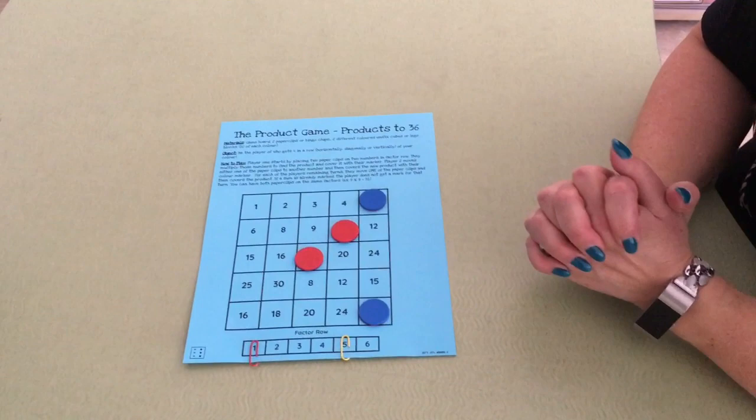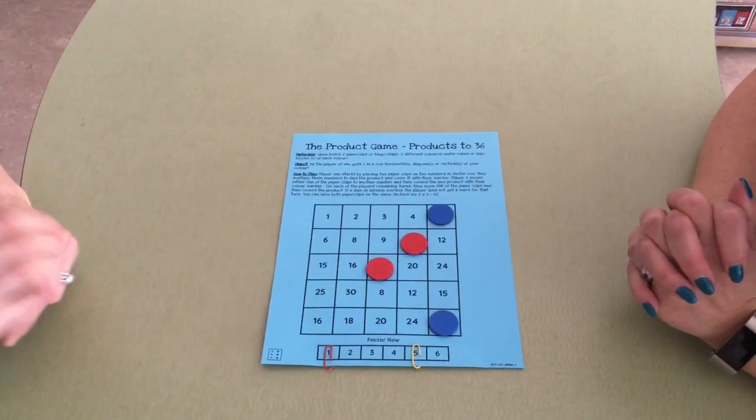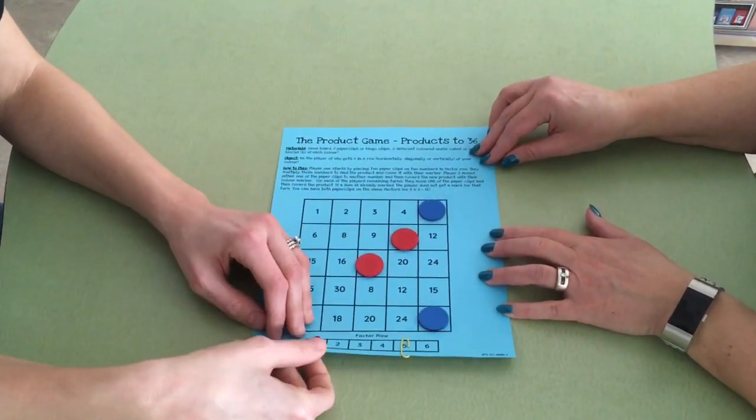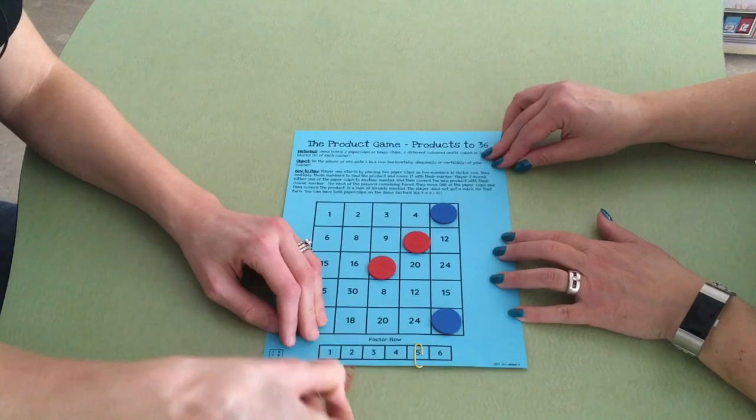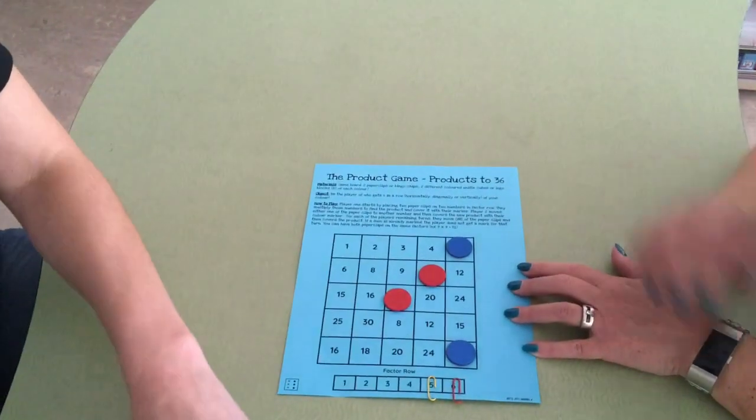So let's see if Ashley can figure out which factor to move. She is in fact going for the 30. I am going to move the one and change it to a six, so that I have five equal groups of six to equal 30.